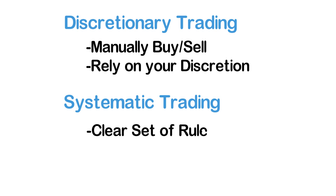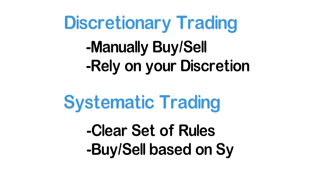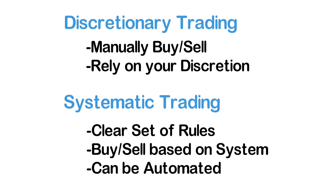Systematic or rules-based trading, on the other hand, is a trading form where you have a clear system with exact rules that tell you when to buy or sell a given security. System traders usually use algorithms to automatically execute their trades. In this video, we will focus on algorithmic system trading.